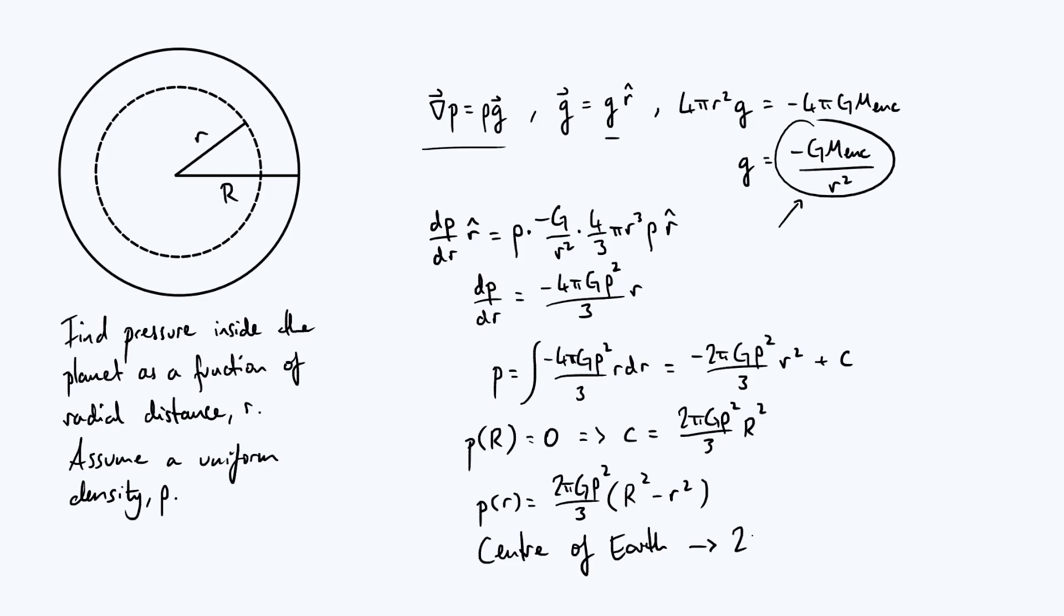If you do that, you get to one significant figure, about 200 gigapascals. Now that's of course not perfect, but it's actually pretty decent. The order of magnitude is correct if you compare that with other values of the pressure at the center of the Earth that you will find around.